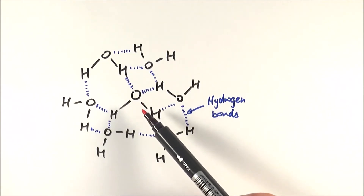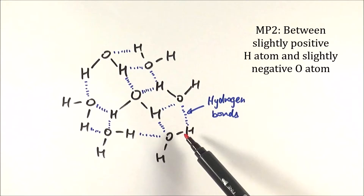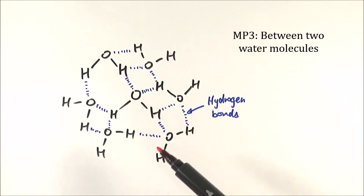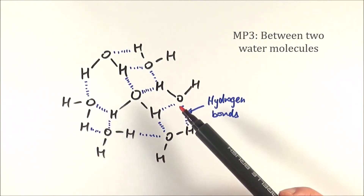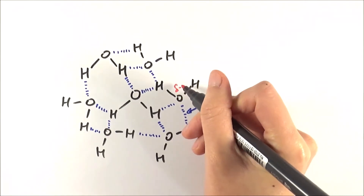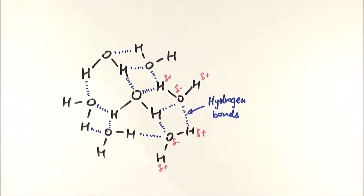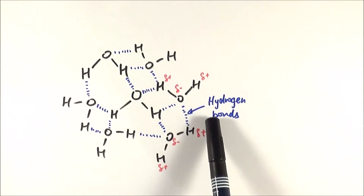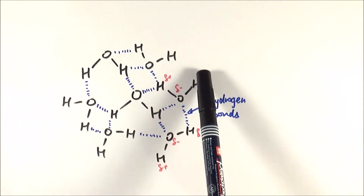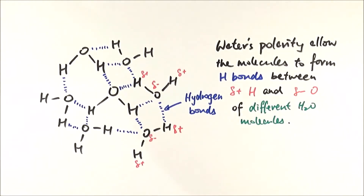Make sure you illustrate that the hydrogen bond forms between a delta negative oxygen and a delta positive hydrogen of a different water molecule — not the same molecule, otherwise the examiner may think you are drawing a covalent bond within the same molecule. In the exam you can draw or write it out. A classic three-mark answer covers: (1) hydrogen bonds exist, (2) oxygen is delta negative and hydrogen is delta positive, and (3) bonds exist between two different water molecules. For example: 'Water's polarity allows molecules to form hydrogen bonds between the delta positive hydrogen region and the delta negative oxygen of different water molecules.'